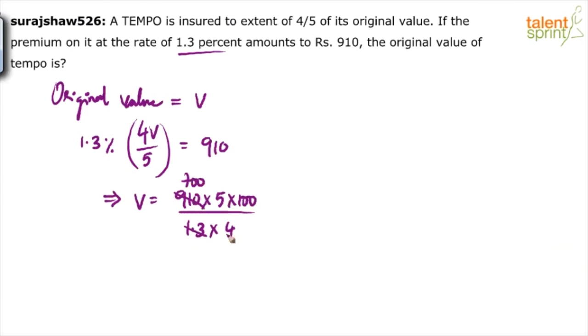So 700 × 100 × 5/4, or 700 × 1.25. 700 × 1.25 would be how much? 875. 875 × 100. So 87,500 is the final answer.